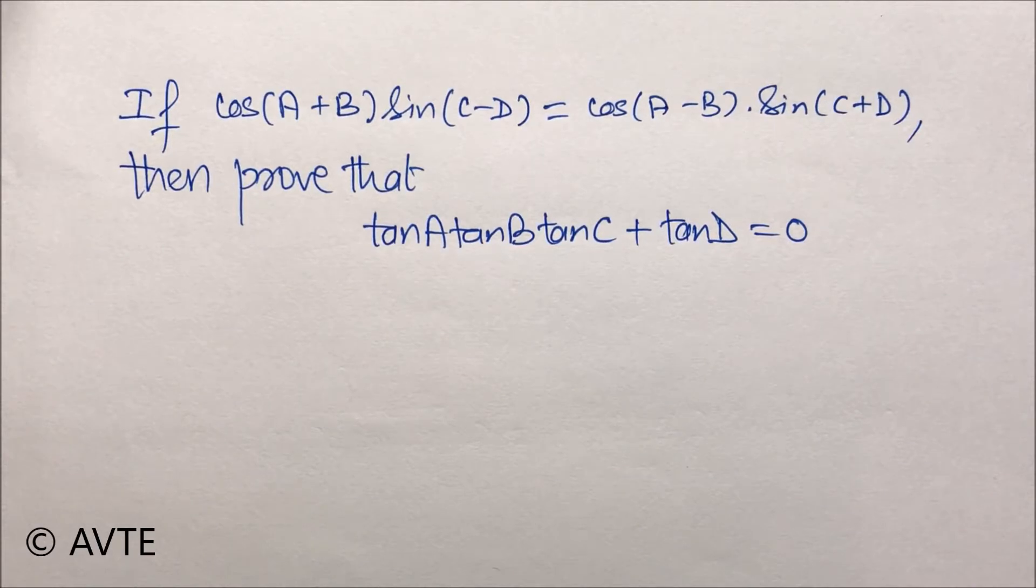If cos(A + B) sin(C - D) equals cos(A - B) sin(C + D), then prove that tan A tan B tan C plus tan D equals zero.